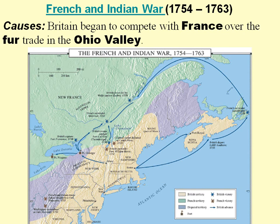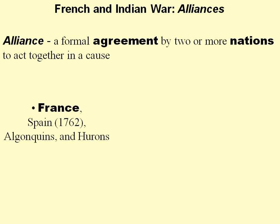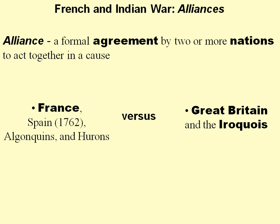The French and Indian War's causes include Britain competing with France over the fur trade in the Ohio River Valley — from the St. Lawrence Seaway down into the Ohio River. An alliance is a formal agreement by two or more nations to act together in a cause. France was allied with Spain and certain Native American tribes, while Great Britain was allied with their own Native American tribes. It becomes known as the French and Indian War, but Native Americans fought on the side of the British as well. Some tribes didn't agree with others, so they joined whichever side would best benefit them.